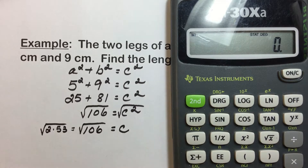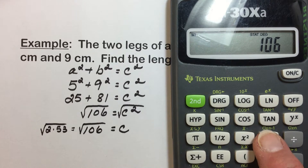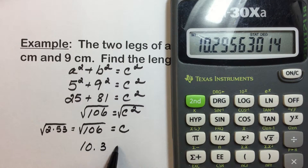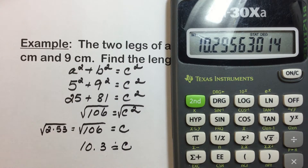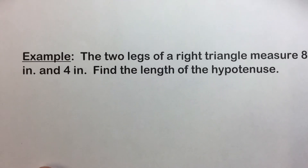If we want an approximation for this hypotenuse, we can enter 106 in the calculator and then tap the square root key to give us a value of approximately 10.3, if we round to the nearest tenth. Let's take a look at another example.